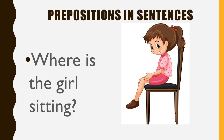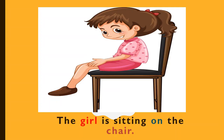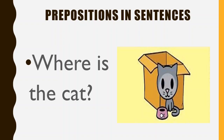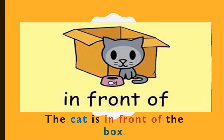Now tell me, where is the girl sitting? Very good — the girl is sitting on the chair. Here the preposition used is 'on.' Now, where is the cat? The cat is in front of the box. 'In front of' is another preposition.